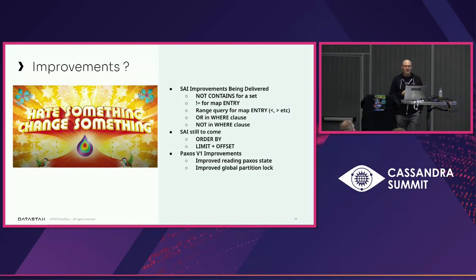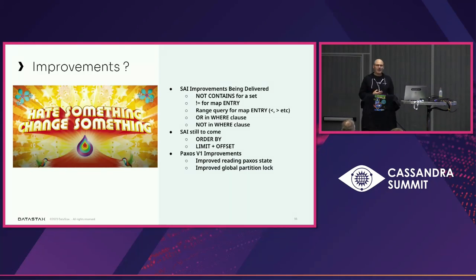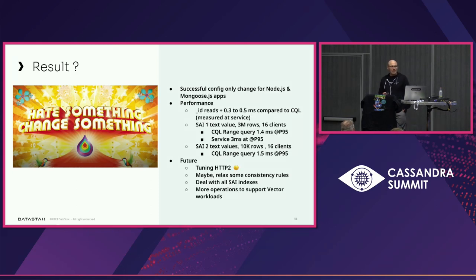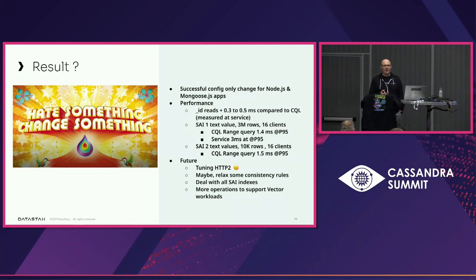What improvements did we come up with? A bunch of improvements are coming to SAI: NOT CONTAINS on sets, NOT EQUALS on map entries — you can see them all. OR support is coming, there's a CEP out there for NOT. I'm still a big believer in global order by in CQL, as well as LIMIT and OFFSET to support those queries. We found some things we can improve in Paxos v1 without going to the next level. The end result: Node.js apps can work against DataStax Astra or Stargate sitting in front of Cassandra with just a one-line config change.